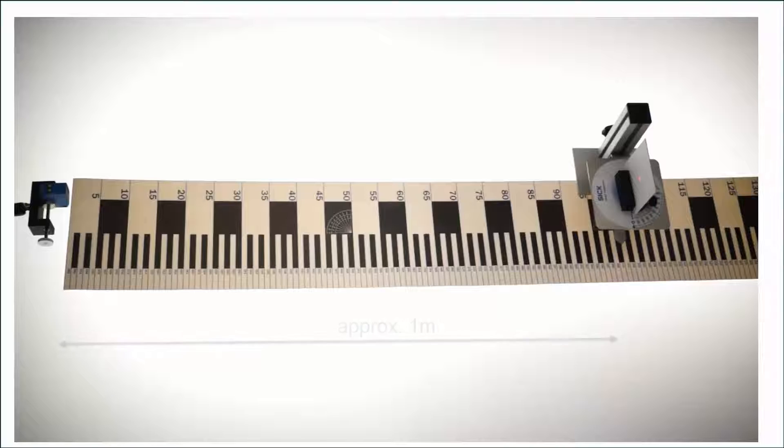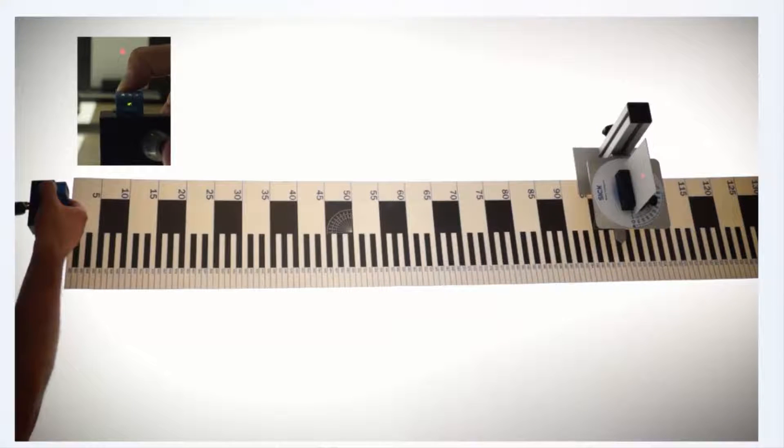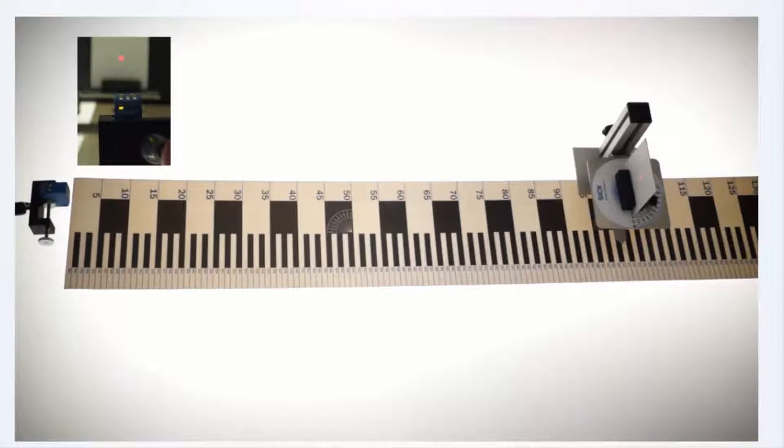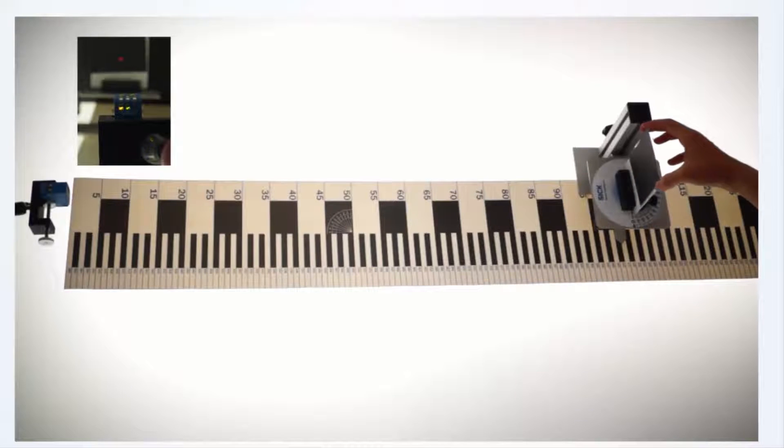In the first step, the sensor is adjusted to detect a white target. When changing the white target to a black target, the detection result remains stable.